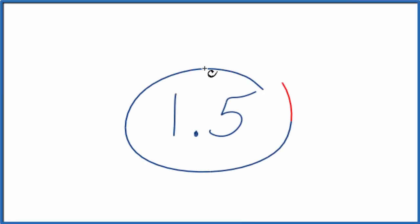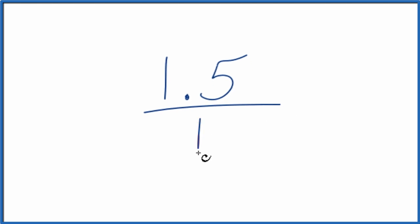Let's write the decimal 1.5 as an improper fraction and then as a mixed number. And here's how we could do that. First off, let's call it 1.5 over 1. That way we have the start of a fraction.